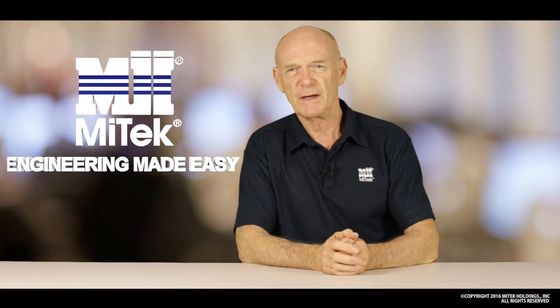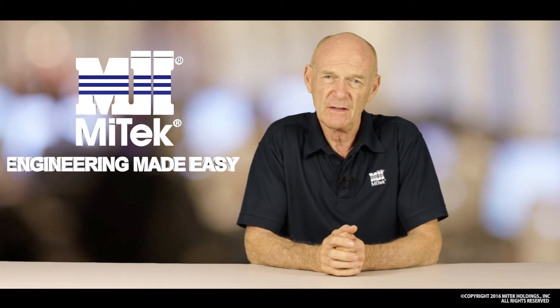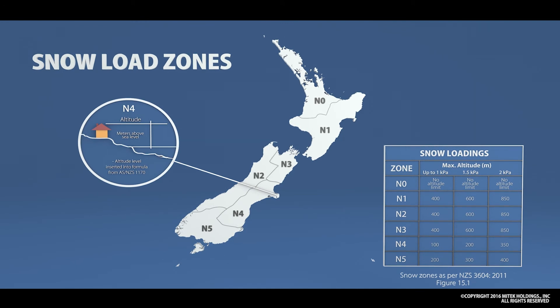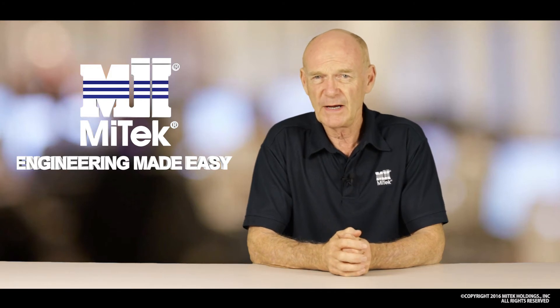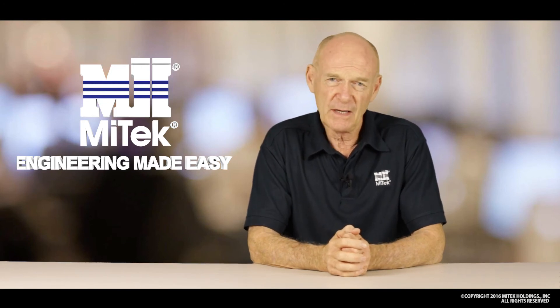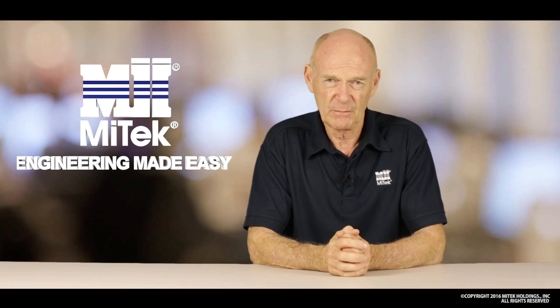The next live load I want to talk about, and this is particularly relevant to the South Island, is the snow load. New Zealand is broken into six separate snow load zones, starting with zone 0 at the top half of the North Island and ending with zone 5 in the lower end of the South Island. To establish our ground snow load, we look at the zone we're in and the exact altitude of the site, put that into a formula from AS/NZS 1170, and derive what we call our ground snow load. Adjustments are then made due to the roof geometry, roof pitch, building importance level, and other factors, from which we derive the actual load used to design that specific building.